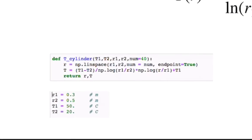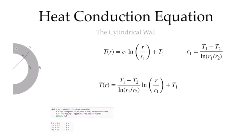This is very simple to code in Jupyter Notebooks. I've shown here a function I've implemented to plot it. The function t_cylinder takes the T1 and T2 boundary conditions, r1 and r2, and an optional argument for how many points to plot. It implements this exact expression. If I plot that with these values, these radii and temperatures, I get the blue line here.